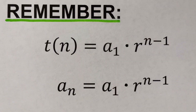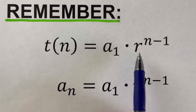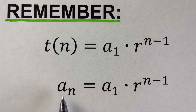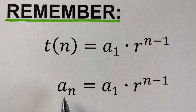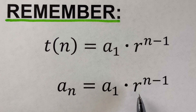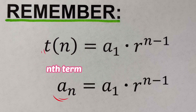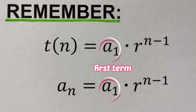We remember that the nth term of a geometric sequence is represented as: t(n) = a₁ × r^(n−1). The t(n) can also be represented as a sub n — some textbooks use t(n), others use a sub n; they're the same thing. Both t(n) and a sub n represent the nth term of the sequence, while a sub 1 is the first term.